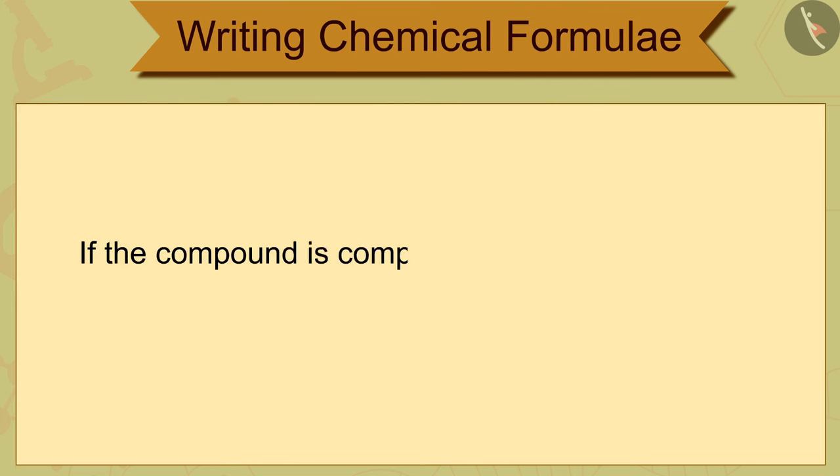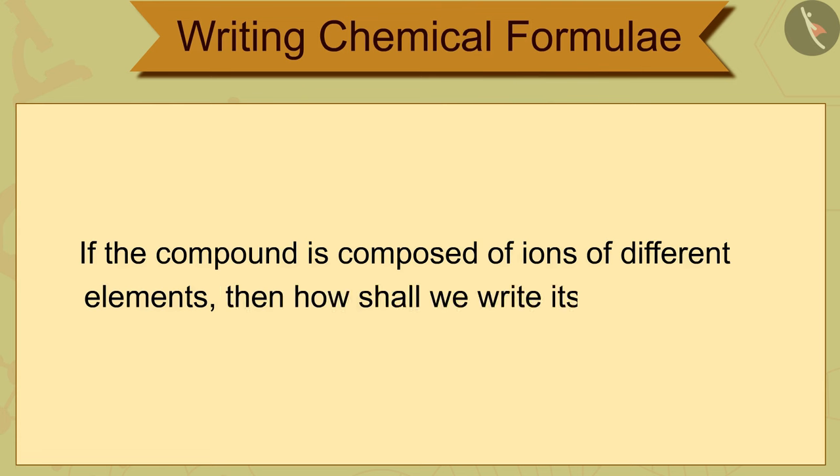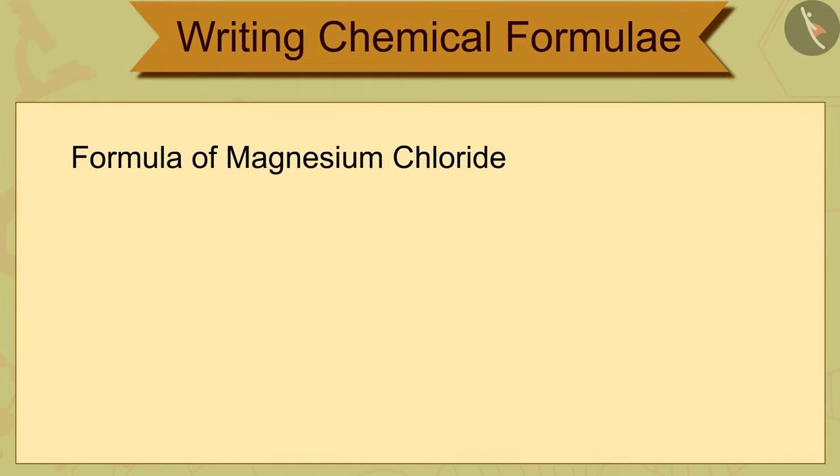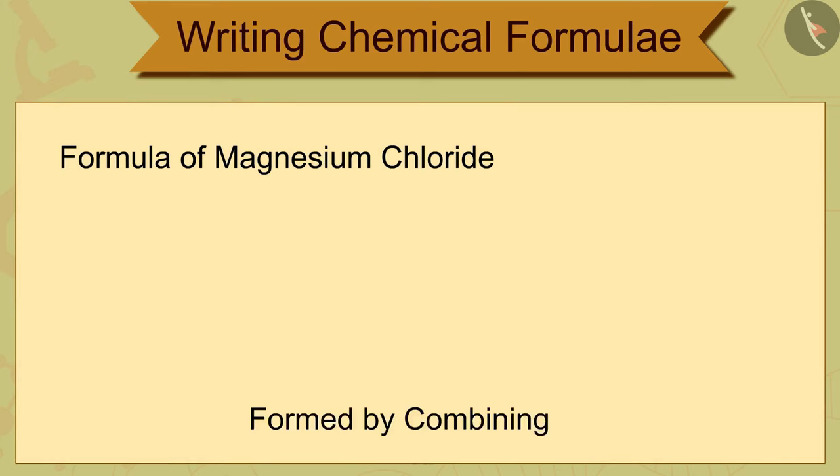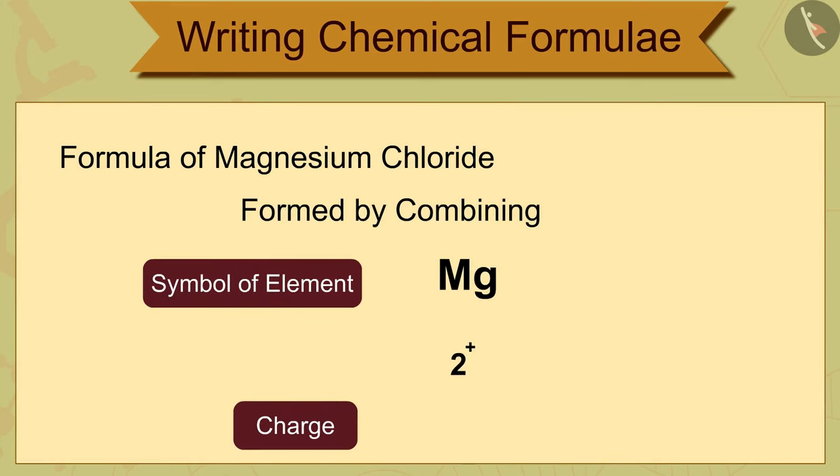But if the compound is composed of ions of different elements, then how shall we write its formulae? Let us understand this by an example: magnesium chloride compounds are formed by magnesium Mg2+ and chloride Cl- ions.